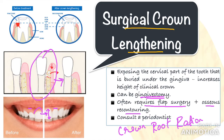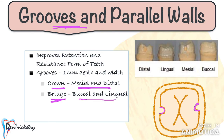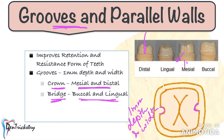Next is improving the retention and resistance form of the tooth by placing grooves. For a crown, the grooves should be placed on the proximal aspect — that is the mesial and distal surfaces — as it is more prone to dislodgement along the buccolingual direction. In the case of a bridge, place the grooves on the buccal and lingual surfaces, as tipping forces mainly act on the mesial and distal aspect. Take a straight bur, keep it parallel to the tooth surface, and create a groove of at least 1 mm in depth and width, placed 1 mm above the gingival margin. Also, keep the walls as parallel as possible — you don't want to increase the taper.